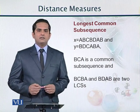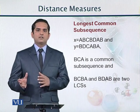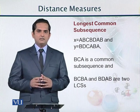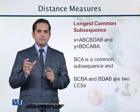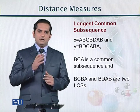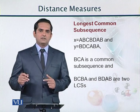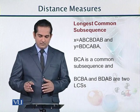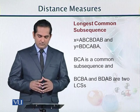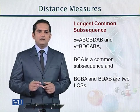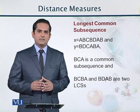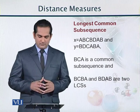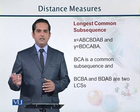The second thing is the longest common subsequence. A subsequence is basically part of a complete sequence, and the longest common subsequence is a subsequence that is available throughout the complete sequence. For example, if x equals a b c d d a b, then b c a is a common subsequence present in both sequences. But the longest common subsequence would be four characters: b c b a and b d a b.